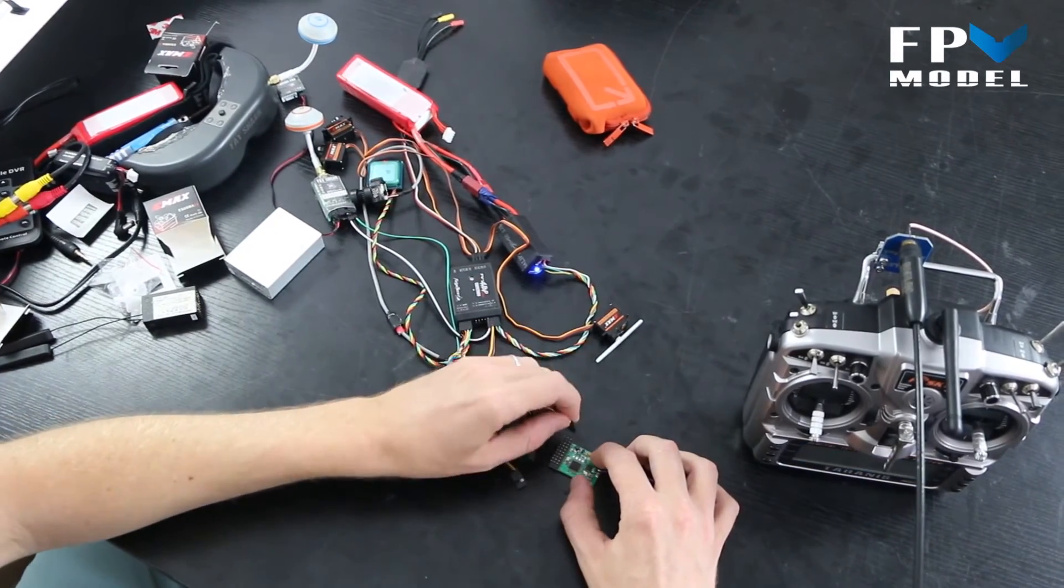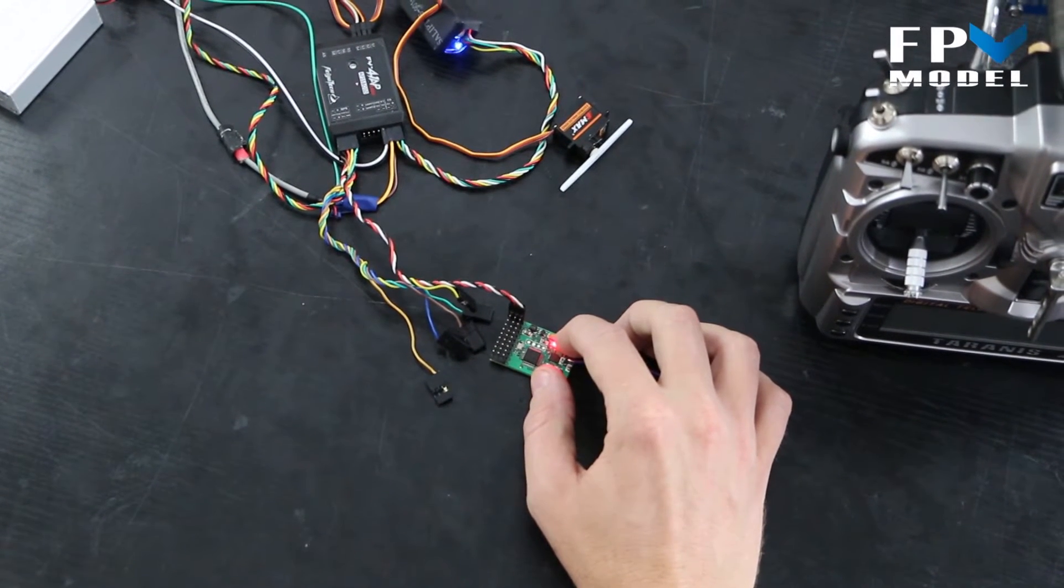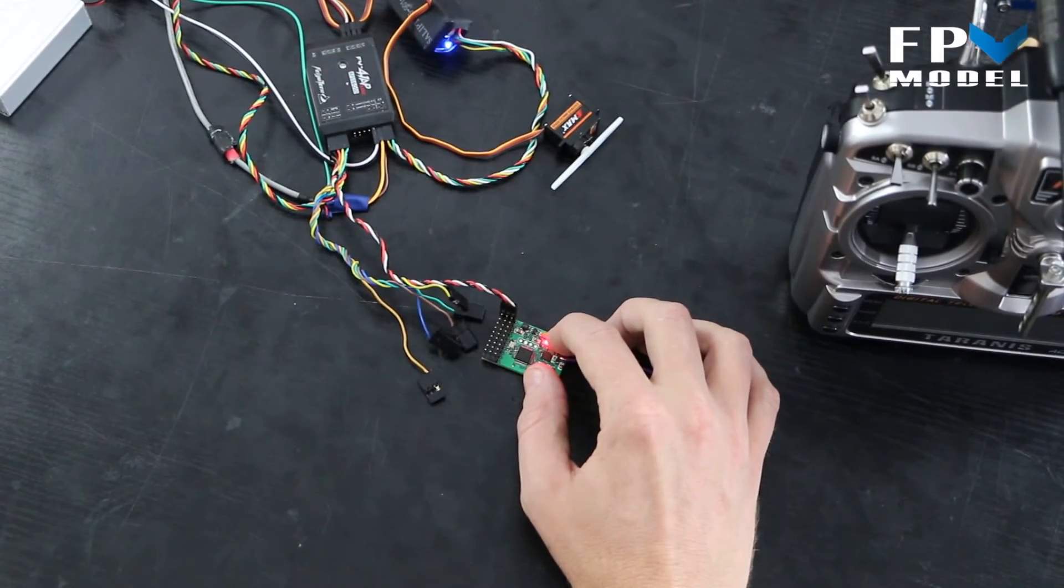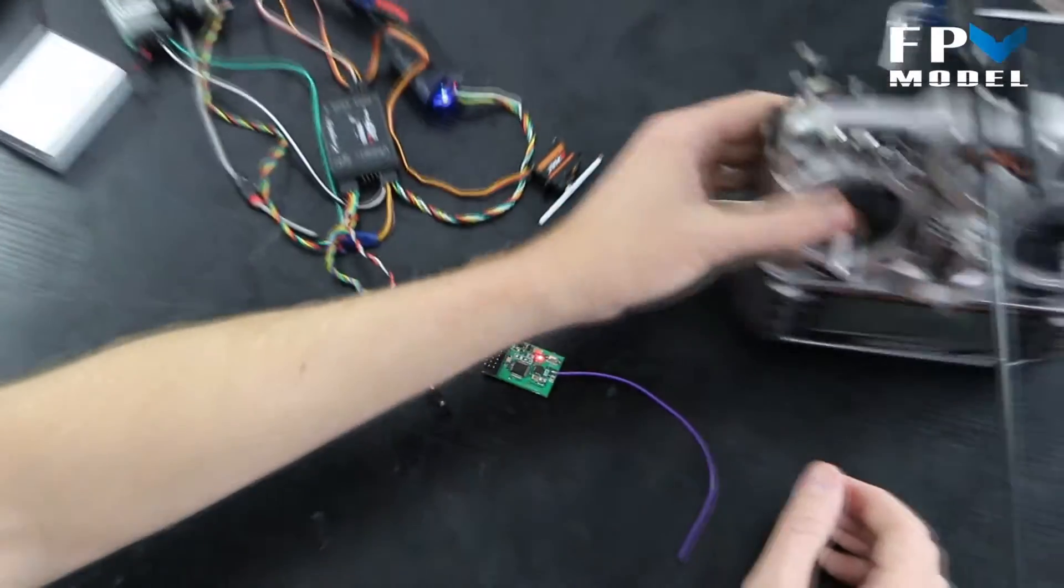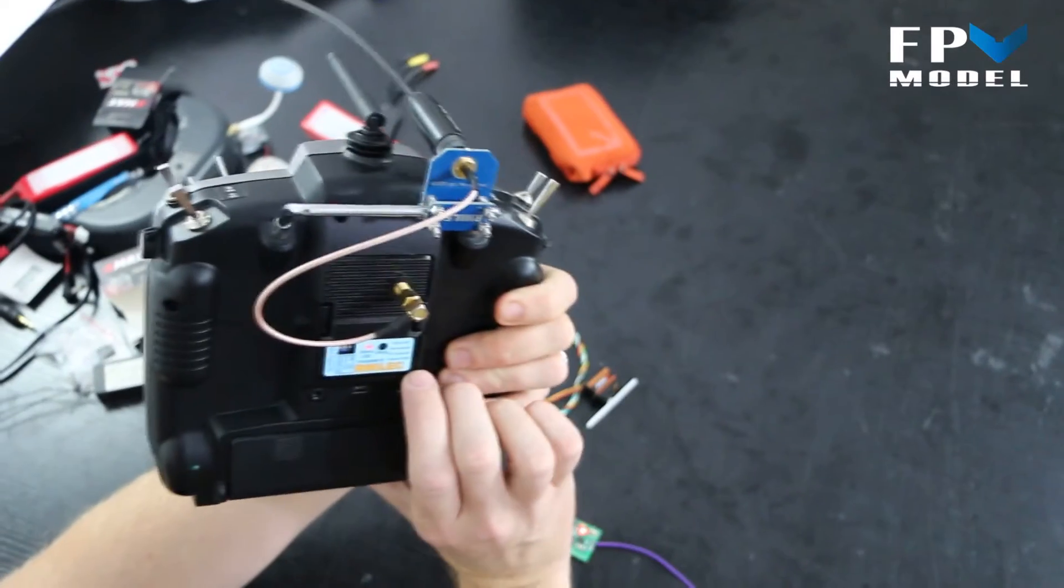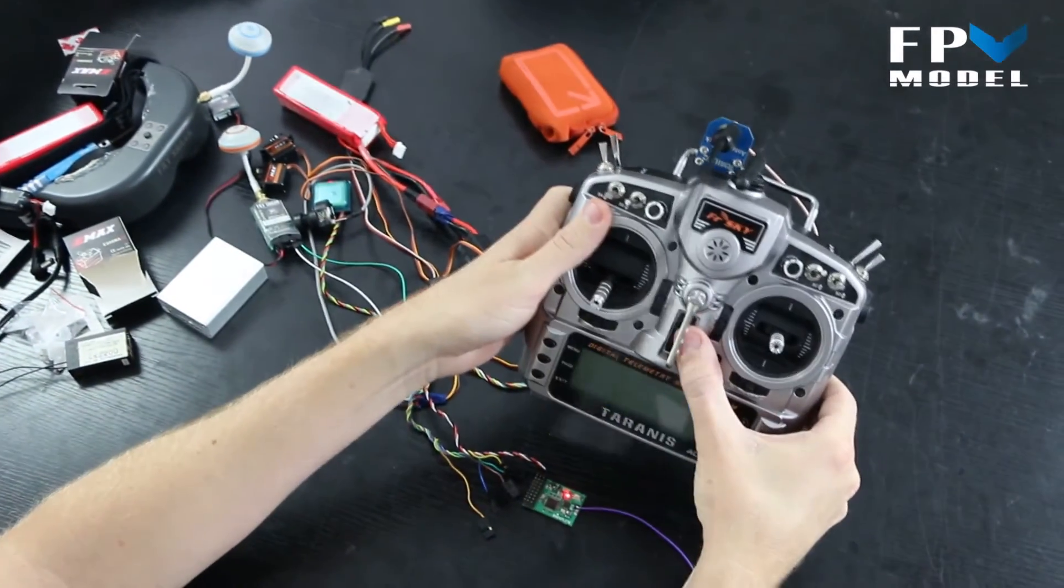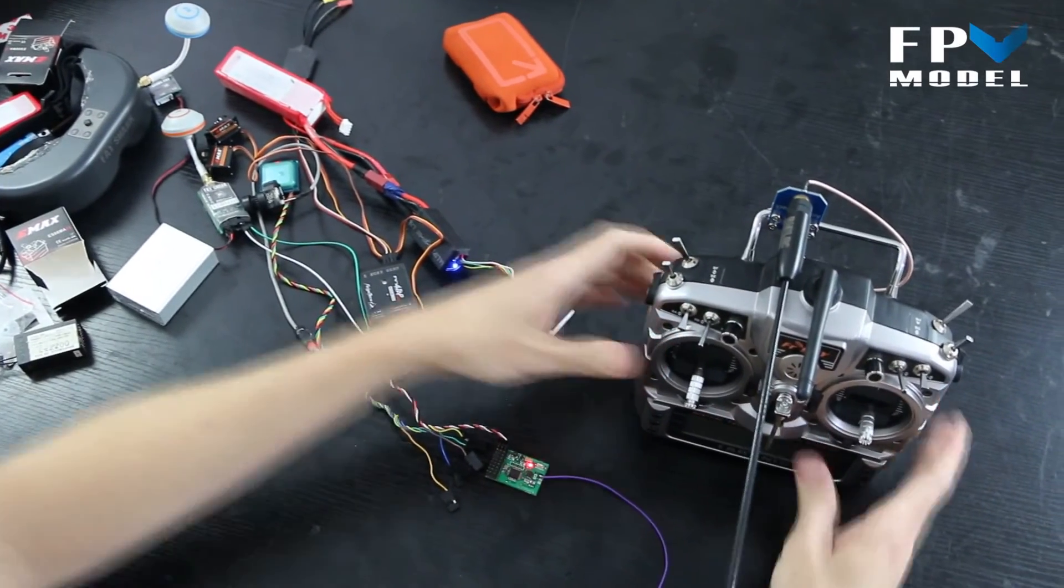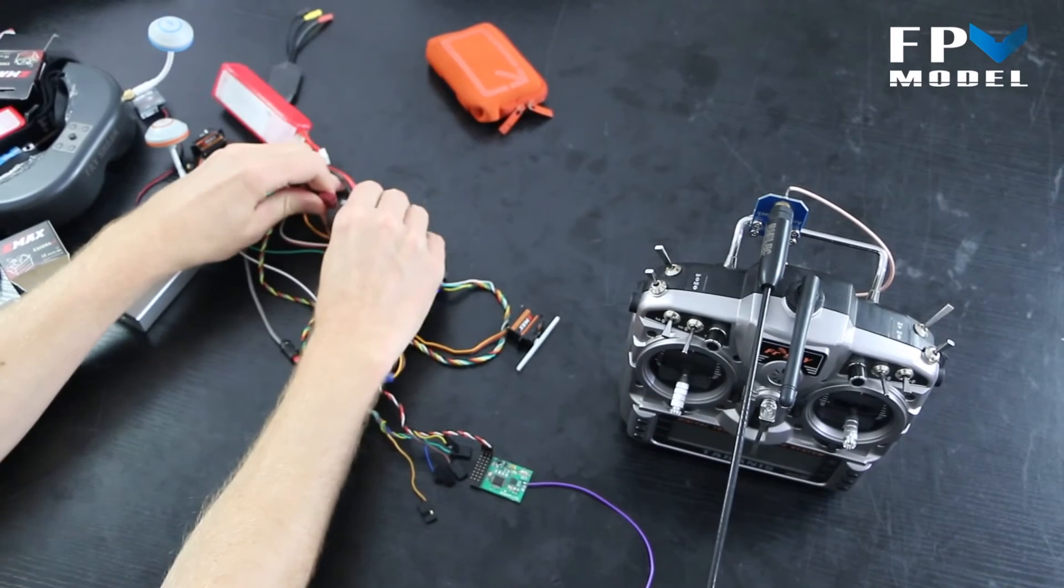I'm going to attach the aileron and the positive and ground cables. Now it is flashing. You can hear the transmitter beeping. Now turn the transmitter off and disconnect the power source. Once the lights go out on the receiver, reconnect the power source.